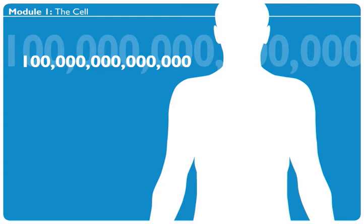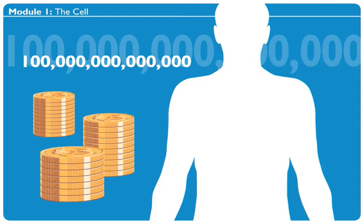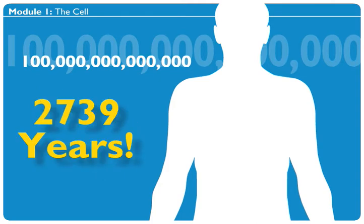Let's say you had one hundred trillion dollars. If you spent one million dollars a day, it would take you 2,739 years to go broke. Whoa, that's a lot.